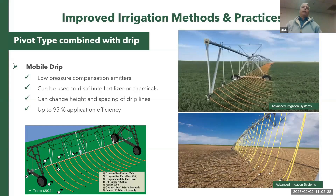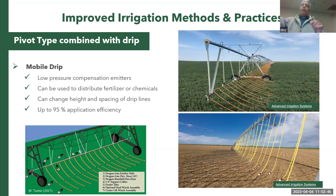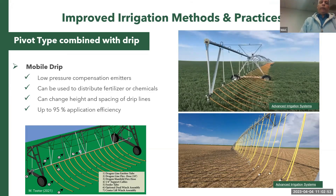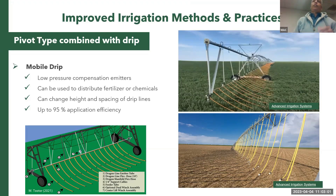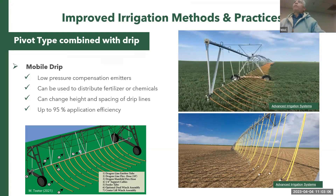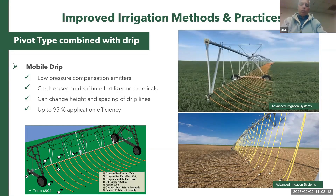Mobile drip, also called dragon line, allows you to modify a center pivot or linear system using drip tapes instead of sprinklers. It operates at low pressure, can apply chemicals, and has high application efficiency. One issue is that the tape can be damaged quickly from dragging — some farmers have had to replace it — though this is a problem the industry hopes to solve.